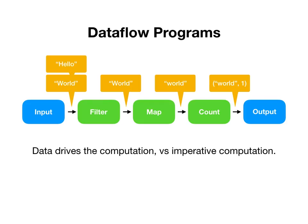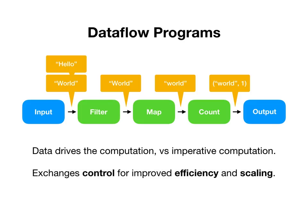Interestingly, the data is what drives the computation, so as the data move computation happens — in contrast with imperative computation where your program specifies exactly what needs to happen next. This exchanges control away from an imperative program to provide improved potential efficiency and scaling. If the underlying system can think of a better way to process your computation, for example it might take 'hello' and 'world' and filter them both at the same time.